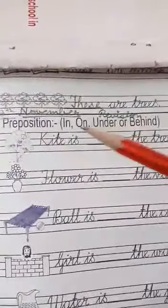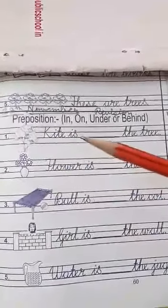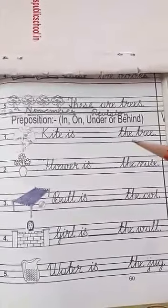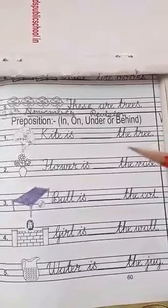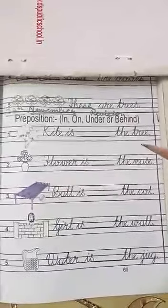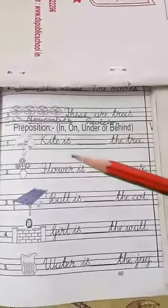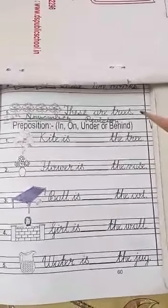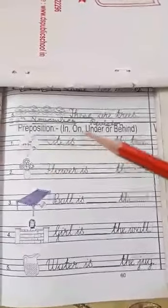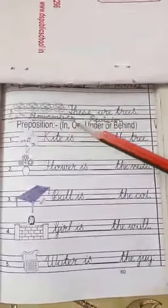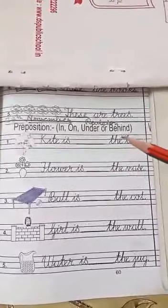Look here number 1. Say with me. K-I-T-E kite I-S is dash T-H-E the T-R-E-E tree. As you know, what are prepositions? Prepositions are used to show the location or position of an object. Like that: in, on, under, or behind.